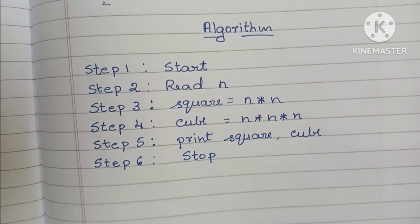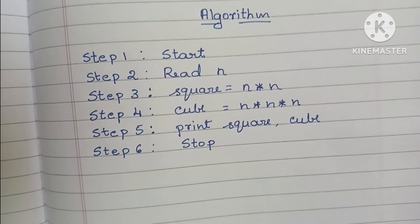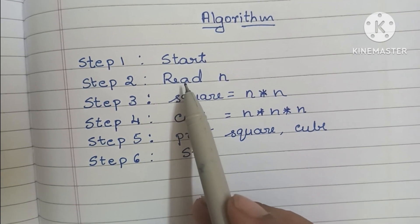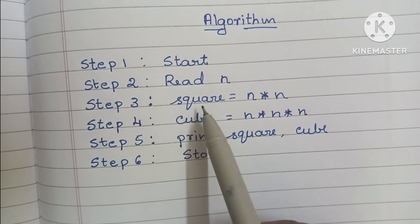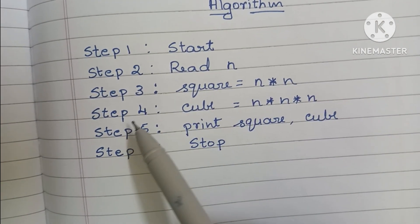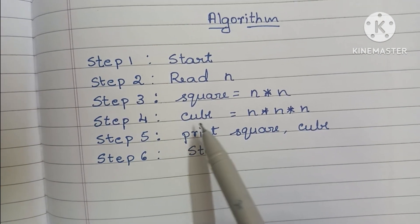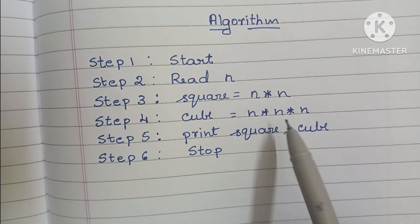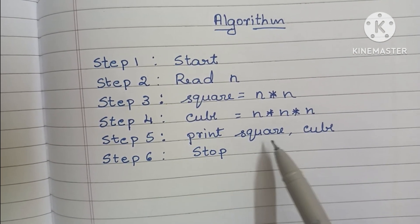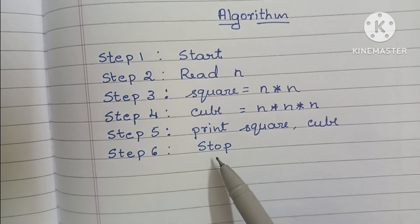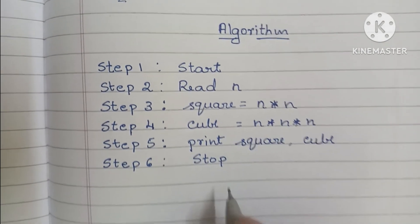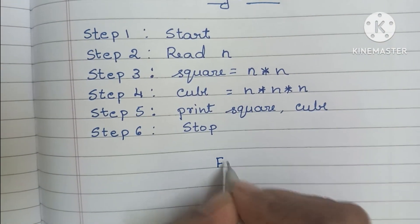So this is the algorithm to find square and cube of a number: Step 1 — Start. Step 2 — Read input value, that is read N. Step 3 — Calculate square = N × N. Step 4 — Find cube = N × N × N. Step 5 — Print output values, that is square and cube. Step 6 — Stop the algorithm using the stop statement. Next, we have to draw the flowchart for it.